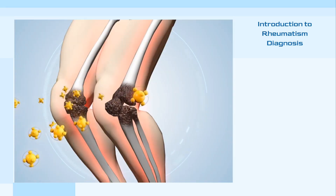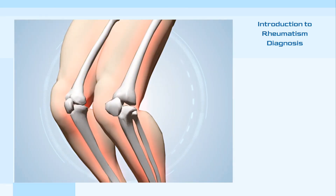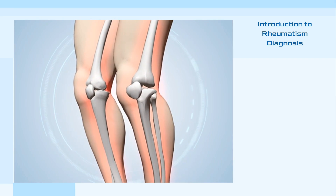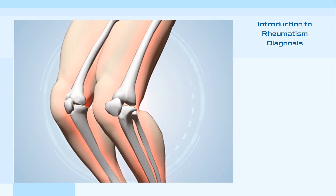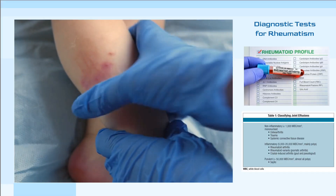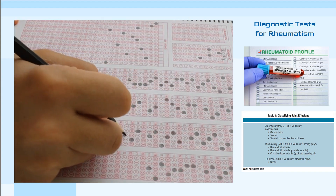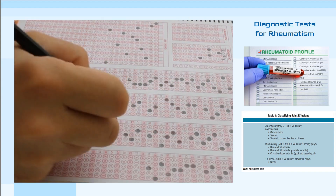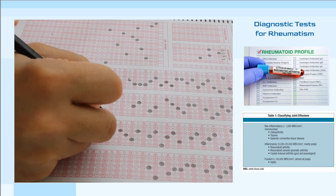Rheumatism, a group of conditions marked by inflammation or pain in the connective tissues, can be diagnosed through various methods. Diagnostic tests vary, but may include x-rays, MRI scans, CT scans, blood count examination, antibody screening, rheumatoid factor check, uric acid examination, and joint fluid analysis.